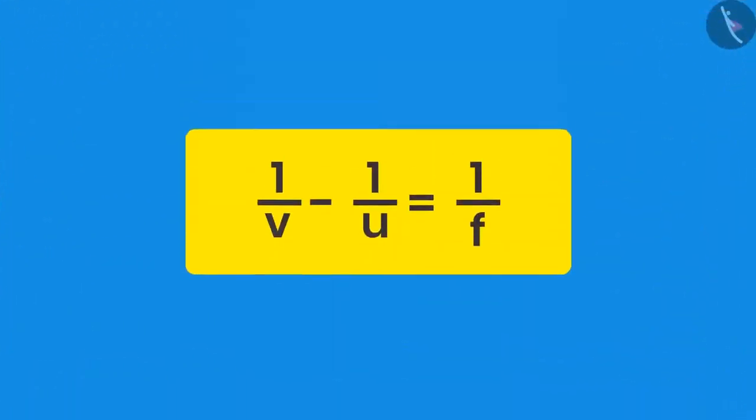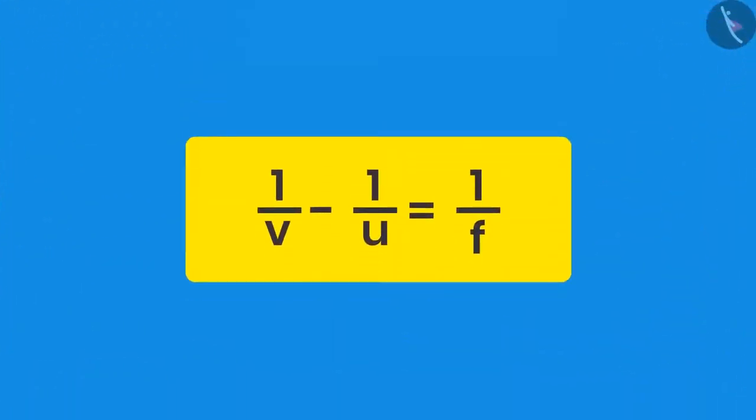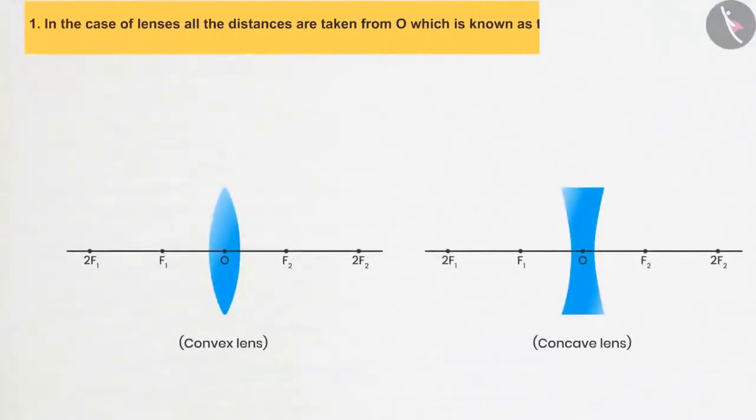For any lens, the lens formula looks like this. Like the mirror formula, the lens formula also has five sign conventions. Number one: in the case of lenses, all distances are taken from O, which is known as the optical center of the lens.